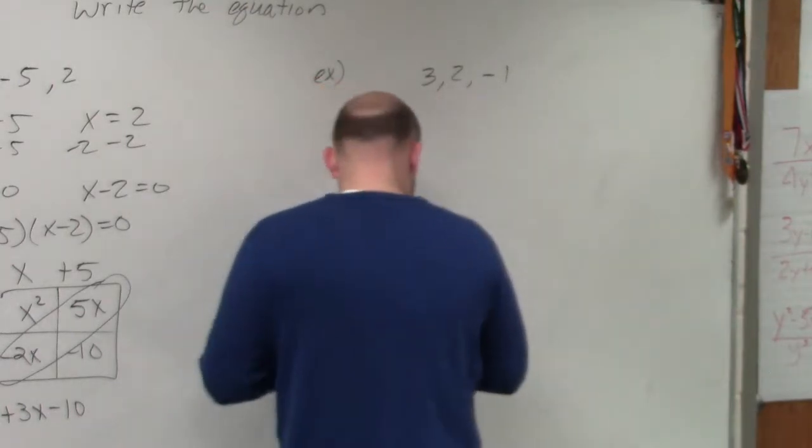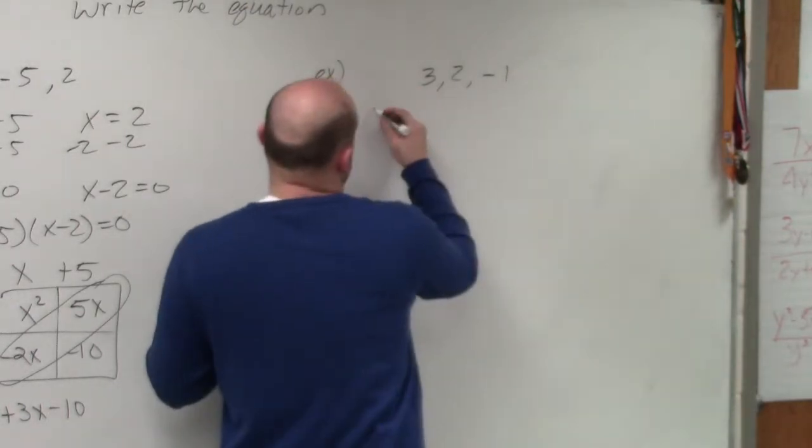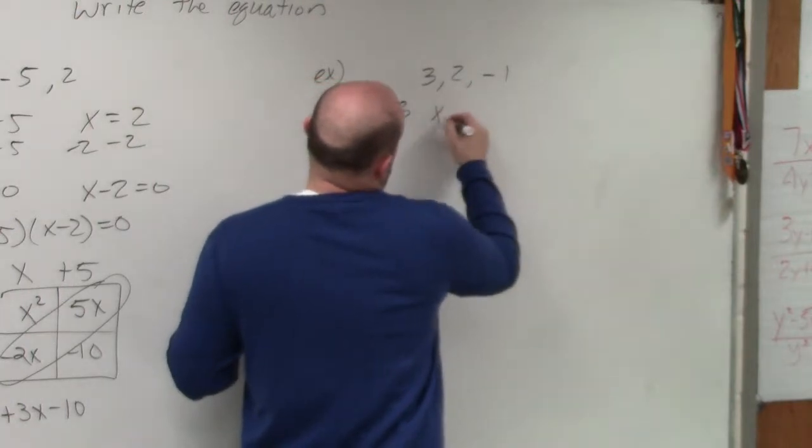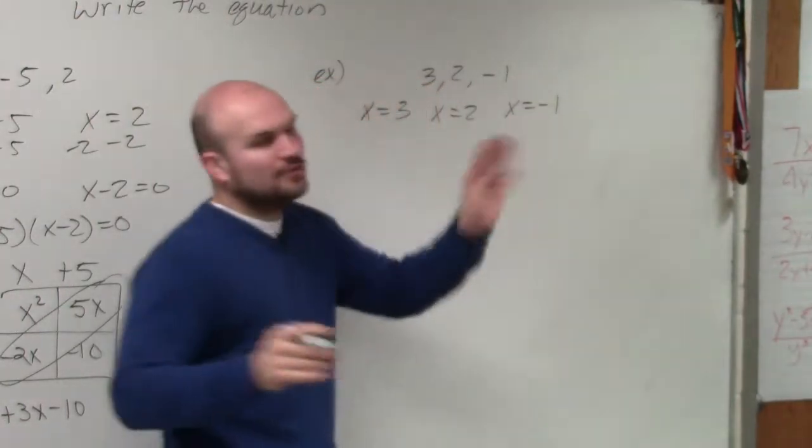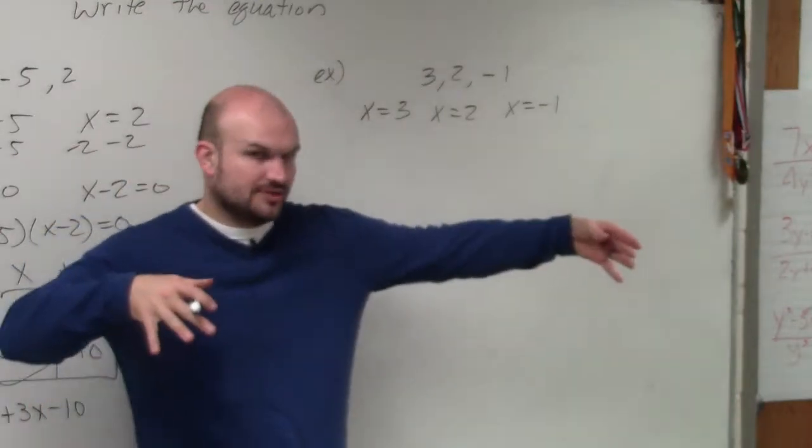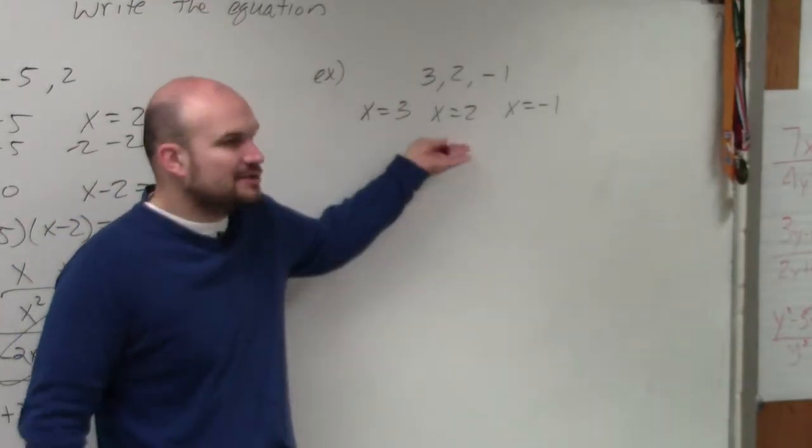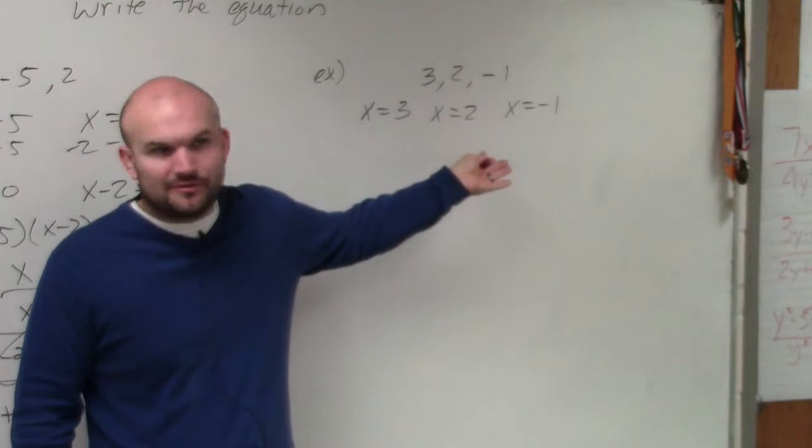So the first thing you guys are going to want to do is set everything equal to 0. x equals 3, x equals 2, x equals negative 1. I know I'm doing all three of them right now, but I eventually will just focus on 2. I think you guys can understand this isn't really that difficult of a step, right?